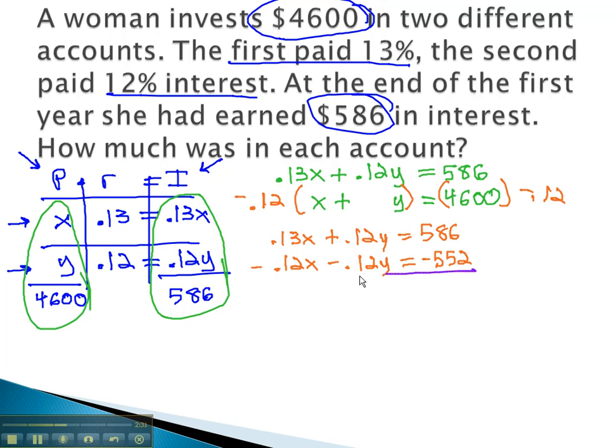We are now ready to combine the equations and eliminate that y. We're left with .01x equals 34. We can get the x alone by dividing both sides by .01, and we find out x, the amount in the first account, is 3400.